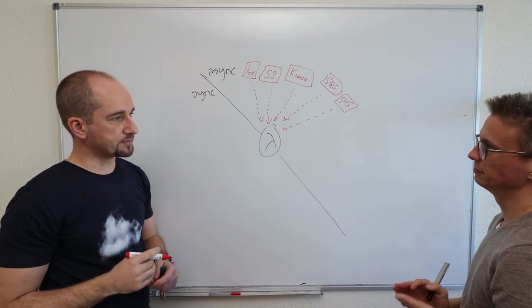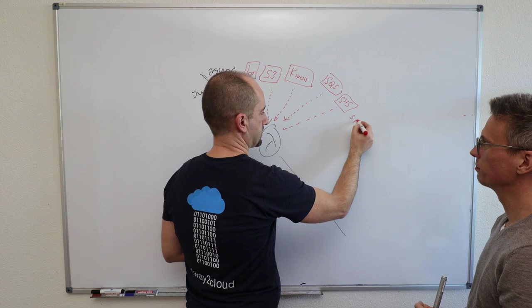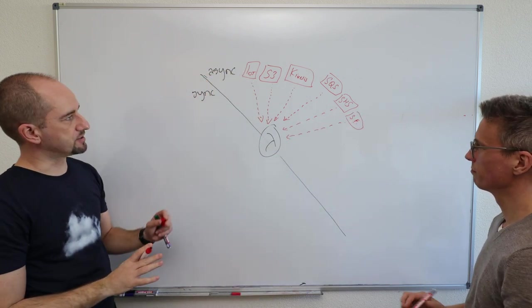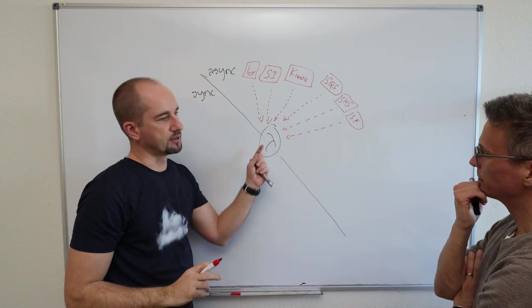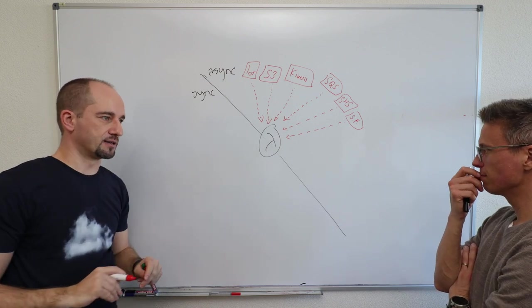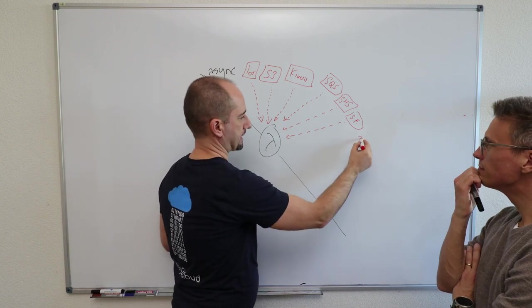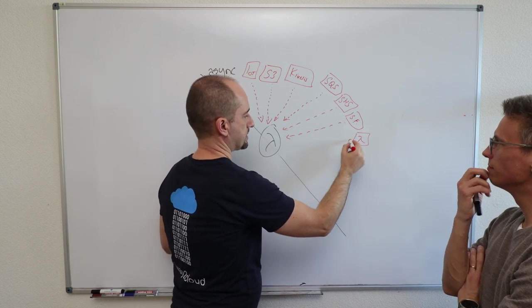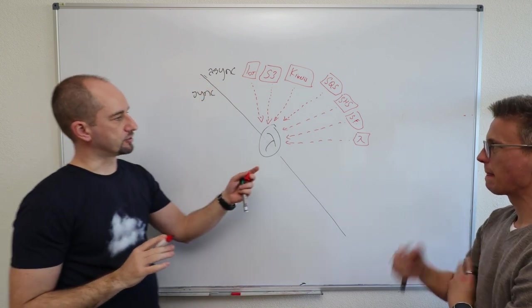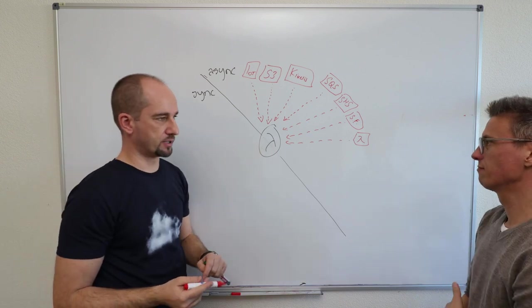And step functions, for example, orchestration service for Lambda. I'll just put step functions like this. Step functions is an interesting service because it operates in both ways. It can invoke Lambda in both asynchronous and synchronous way. That's why we're going to put it on this side later on as well. And I would say there's also like a Lambda itself. So Lambda itself can call another Lambda through a feature called Lambda Destinations where you can asynchronously invoke Lambda.